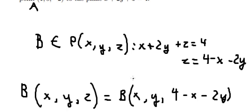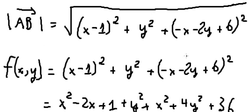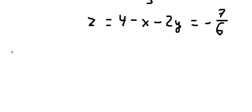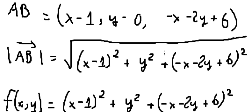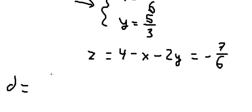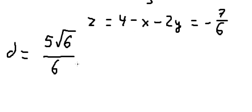With x = 11/6 and y = 5/3, we substitute back to find z = 4 − (11/6) − 2(5/3) = −7/6. We then compute the final distance by substituting into the distance formula, giving a final answer of 5√6 / 6. That is the end — thank you for watching.